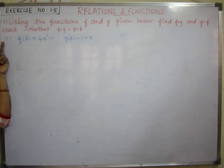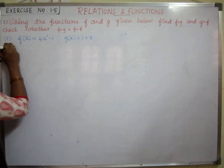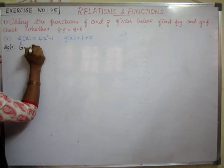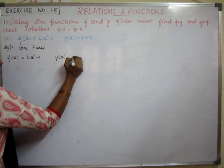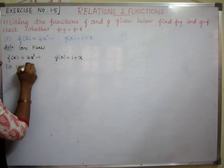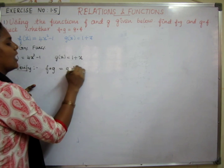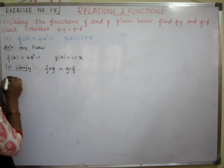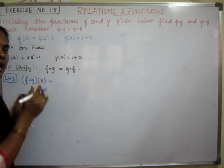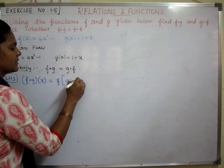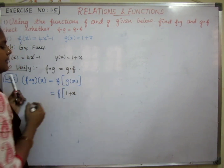Fifth problem — the last one. We check whether f∘g equals g∘f. Solution. Given functions: f of x is equal to 4x squared minus 1, and g of x is equal to 1 plus x. To verify, we find f∘g and g∘f. For LHS, f∘g of x equals f of g of x. Substituting g of x, which is 1 plus x.